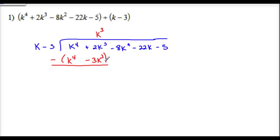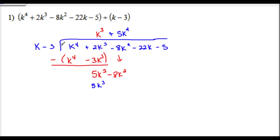So I got 2k cubed plus 3k cubed, which gives 5k cubed, bringing down my negative 8k squared. Next term: 5 goes into 5k cubed how many times? Positive 5k squared times. So this becomes 5k cubed. Negative 3 times positive 5k squared is negative 15k squared. Parentheses, subtract — that gives me 7k squared.